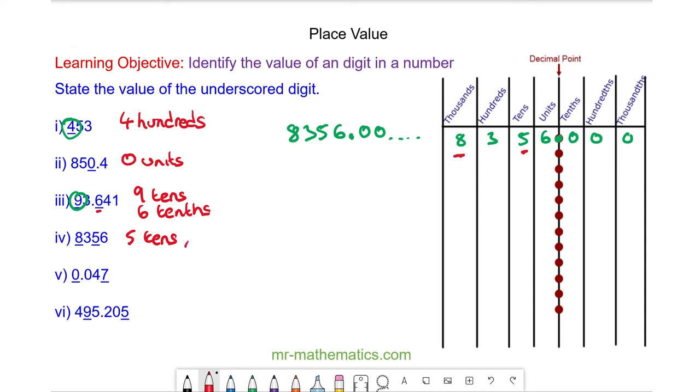The eight is in the thousands. The zero here is in the units column, so we have zero units, and the seven is in the thousandths column, so that is seven thousandths.